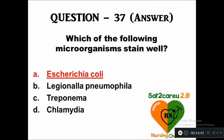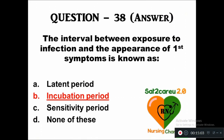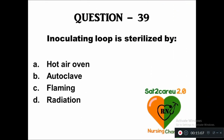Question 38: The interval between exposure to an infection and the appearance of symptoms is known as — option A: latent period, B: incubation period, C: sensitivity period, D: none of these. The right answer is incubation period. Question 39: An inoculating loop is sterilized by — option A: hot air oven, B: autoclave, C: flaming, D: radiation. The right answer is flaming.